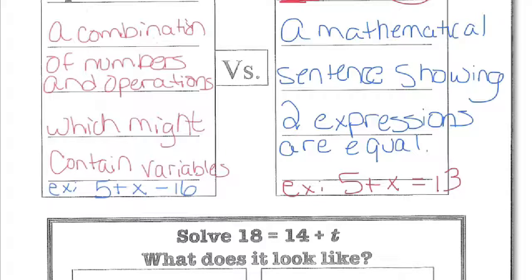If you think about it, another way to think about it in a language arts way is that equations are considered sentences because they have equal signs. Expressions are phrases. They're not complete sentences. They don't have an equal sign. So how are they alike? They're alike because they both have numbers and operations, and they might have variables. But the way that they are different is that one has an equal sign and one does not.